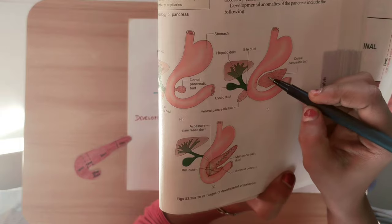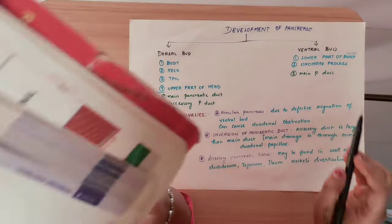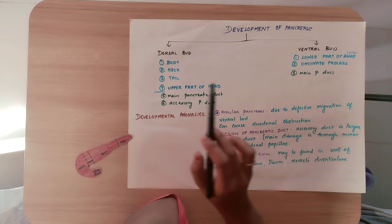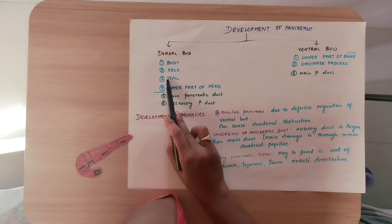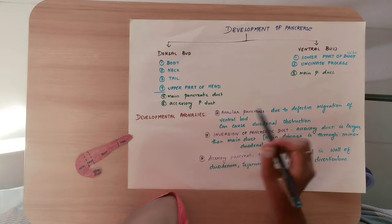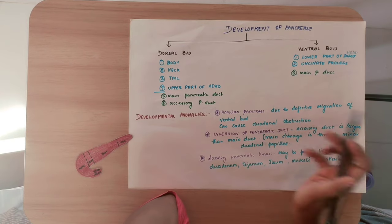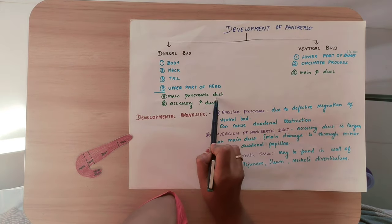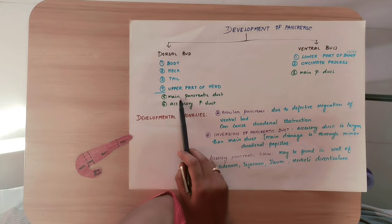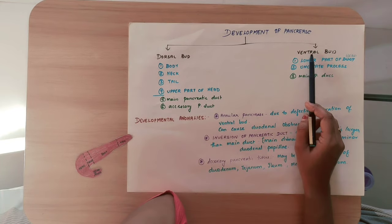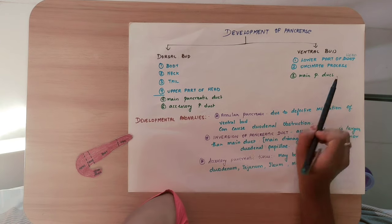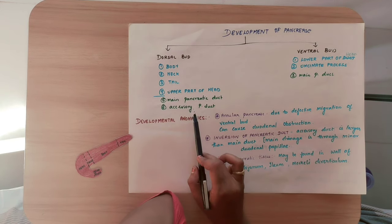The two ducts — one from the ventral bud and one from the dorsal bud — fuse to form the main pancreatic duct. That is why the main pancreatic duct is partly of ventral and partly of dorsal origin.